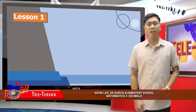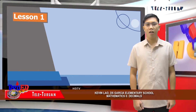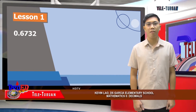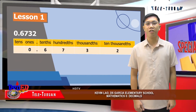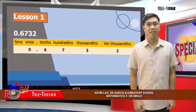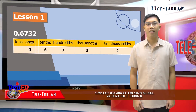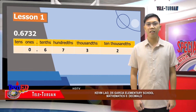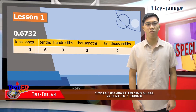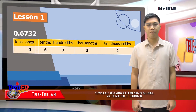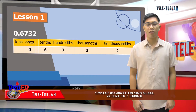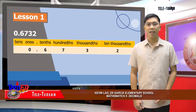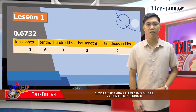Let's study its place value and value. The number six thousand seven hundred thirty and two ten-thousandths can be placed on a place value chart. The first digit after the decimal point represents the tenths place. The next digit after the decimal represents the hundredths place. The remaining digits continue to fill in the place values until there are no digits left. The place value of a digit to the left is ten times that to the right.